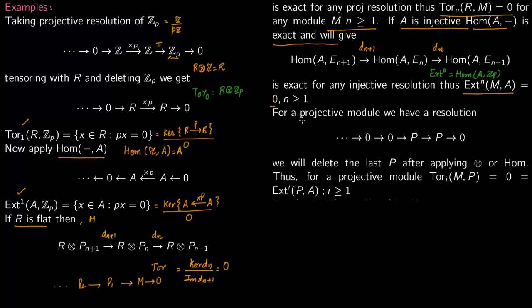So say you have a projective module. So for a projective module you have the standard resolution. You go from P to P to 0, 0, 0. You just have this ID map right here.